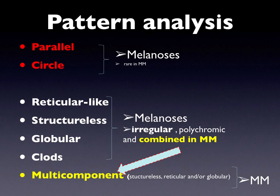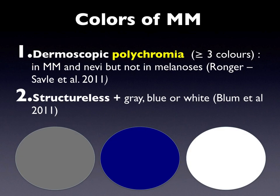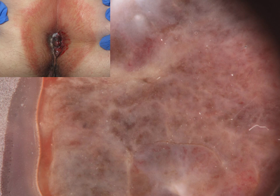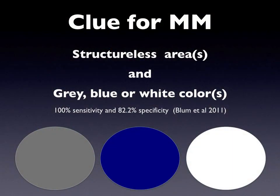However, when these patterns are found in melanoma, they are usually irregular and combined. Melanoma is characterized by multiple colors, and the largest study on dermoscopic features of mucosal lesions has found that the presence of structureless gray, white, or blue areas is a clue for the diagnosis of mucosal melanoma. You can see here an anal melanoma with multiple colors and structureless gray and white areas. The presence of structureless gray, white, or blue areas has a high diagnostic accuracy for melanoma.